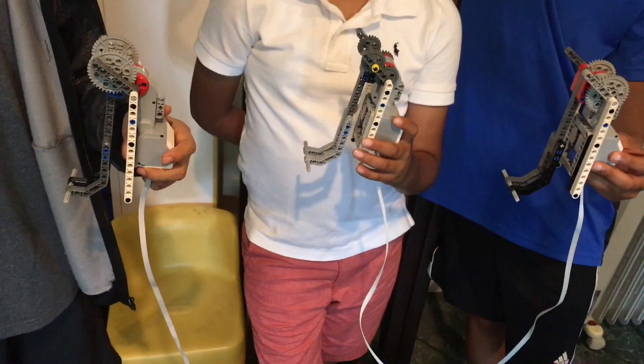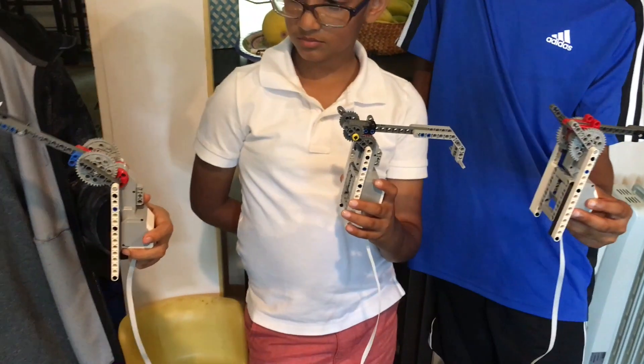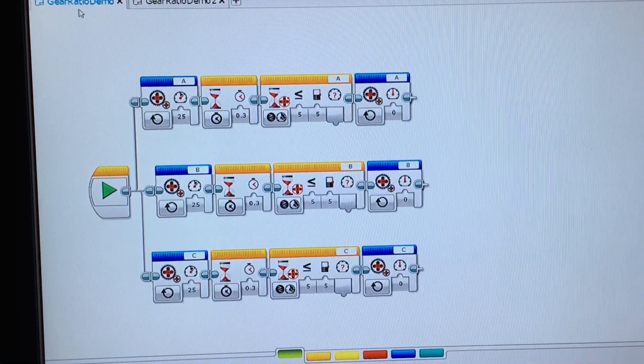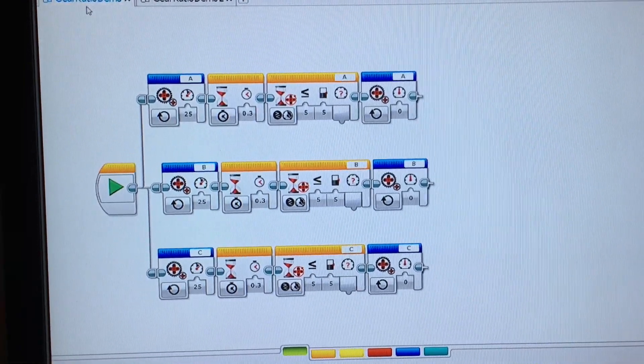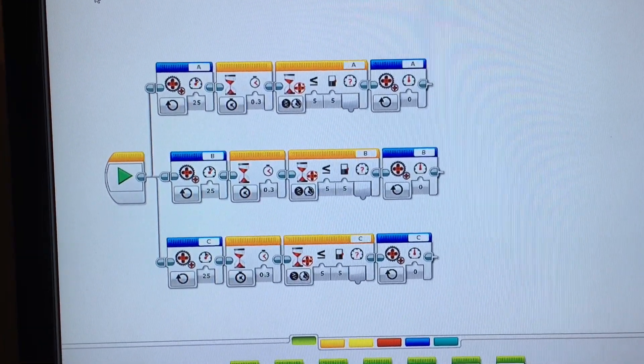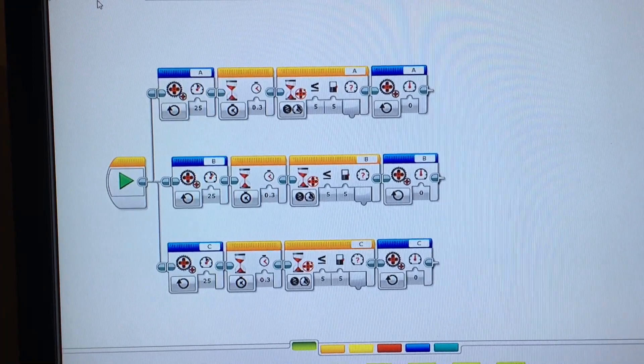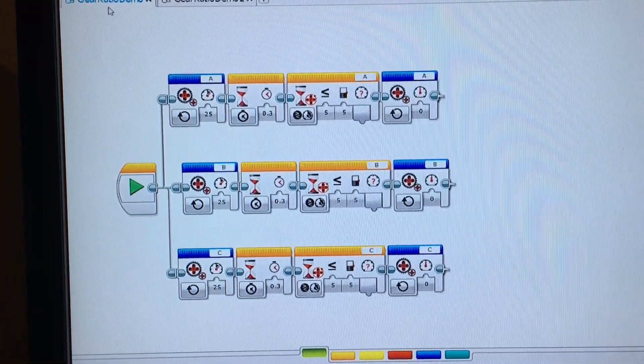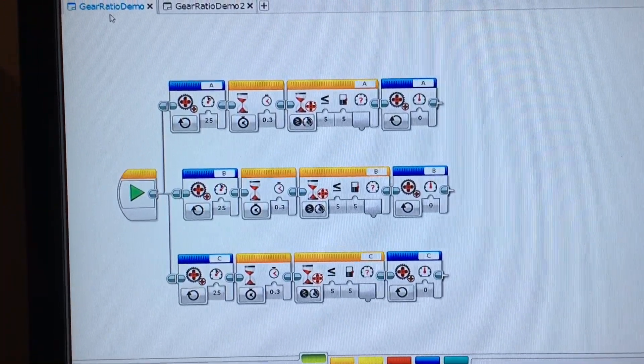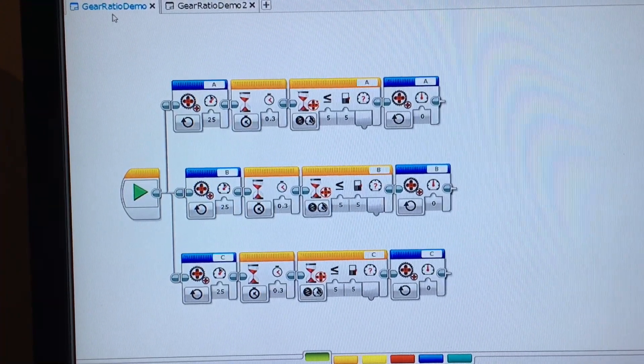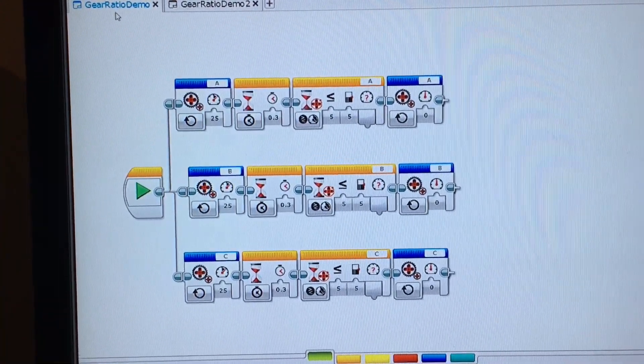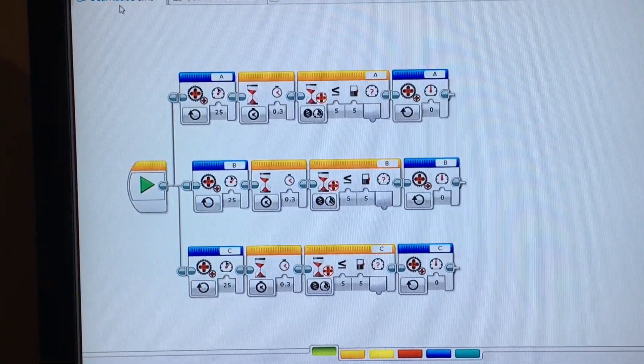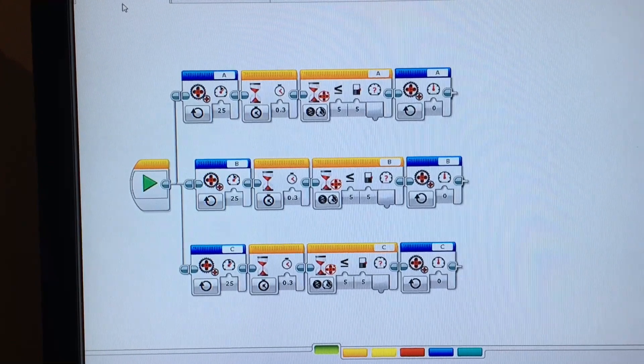I'm starting the program. This is the program that we just ran. At the same time, constant power is being applied to the motors, which is shown in the first block of the three sequences. In the second block, there's a small weight to ensure that the arm has started to move. In the third block, make sure that the speed of the motor is less than or equal to five before it completes the last block, which is to stop the power.